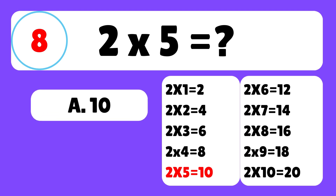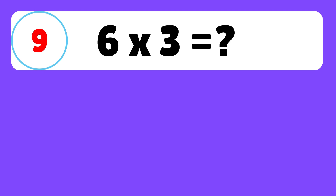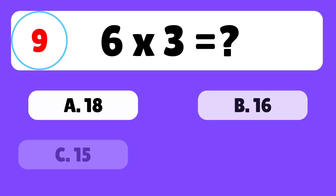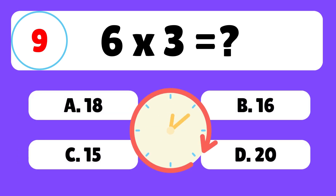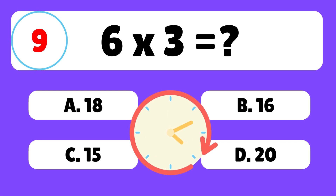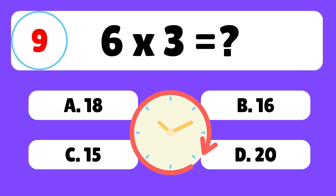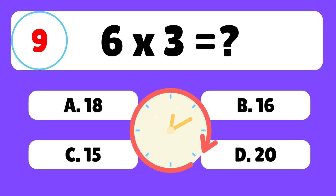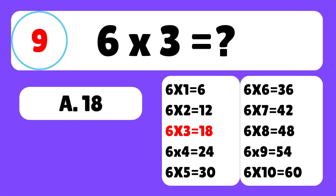Question 9. What is 6 times 3? The answer is A. 6 times 3 is equal to 18.